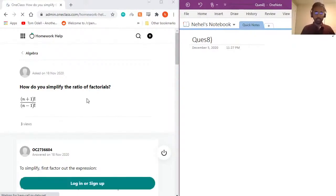Question number eight: how would you simplify the ratio of factorials? So what is a factorial? Let's quickly recap. A factorial is nothing but the product of the number itself with all the numbers from that number.